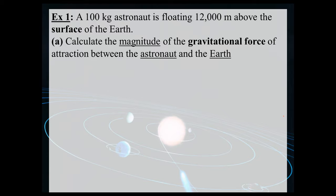Example problem: a 100 kilogram astronaut is floating 12,000 meters above the surface of the Earth. Calculate the magnitude of the gravitational force of attraction between the astronaut and the Earth. Note that our earlier equation Fg equals mg cannot be used here because we don't know the local gravitational acceleration g at that altitude — g equals 9.81 meters per second squared only applies on the surface. We need Newton's universal law of gravitation.